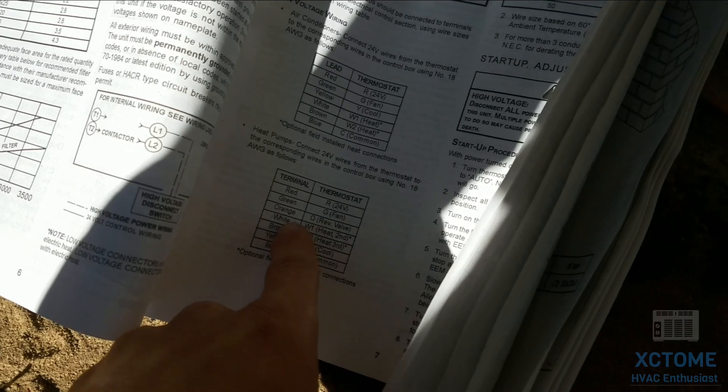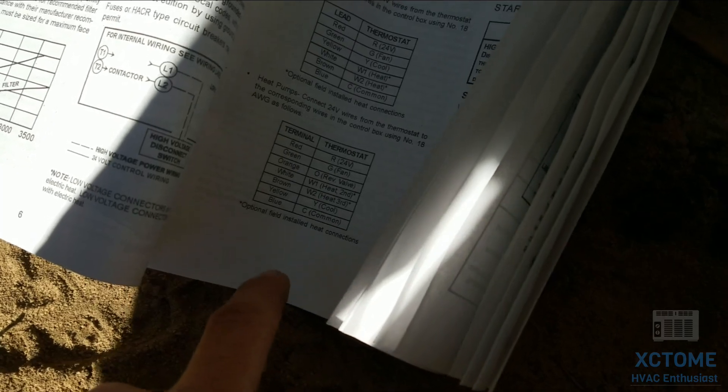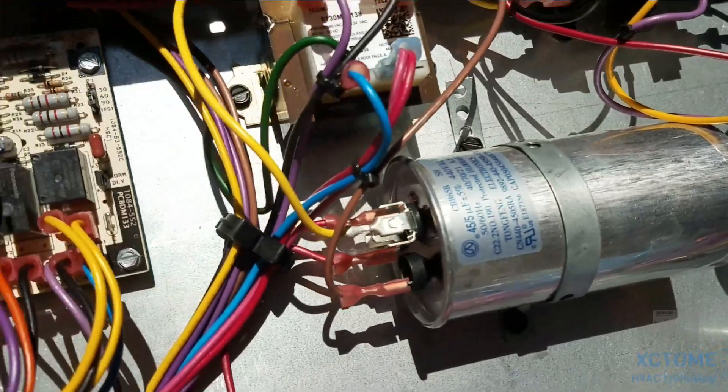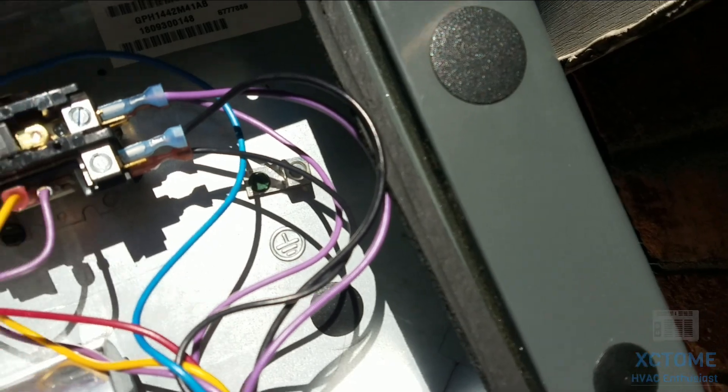RG, orange, white, brown, yellow. W1 heat second. Okay, this says Y coming off here, so we got...